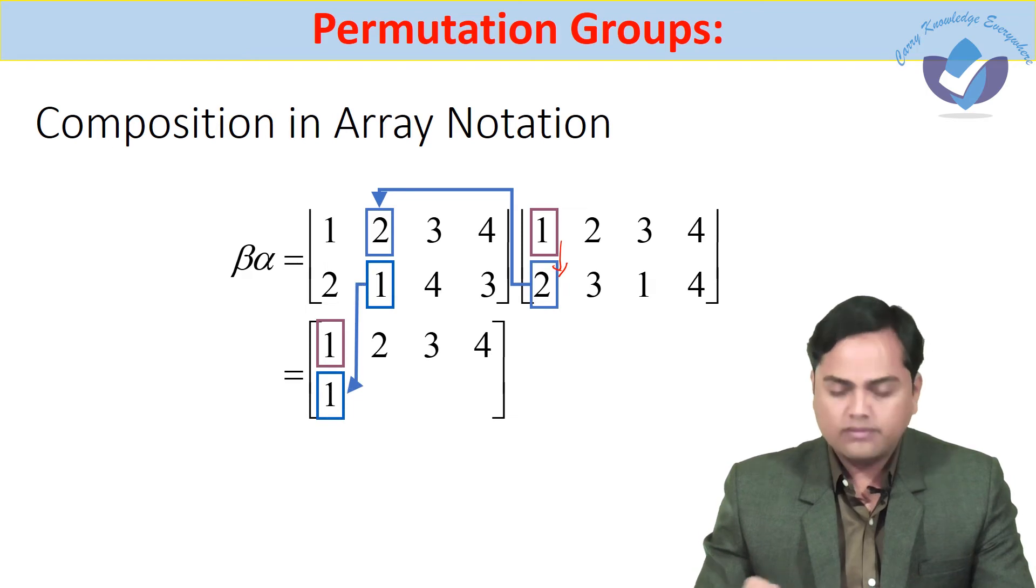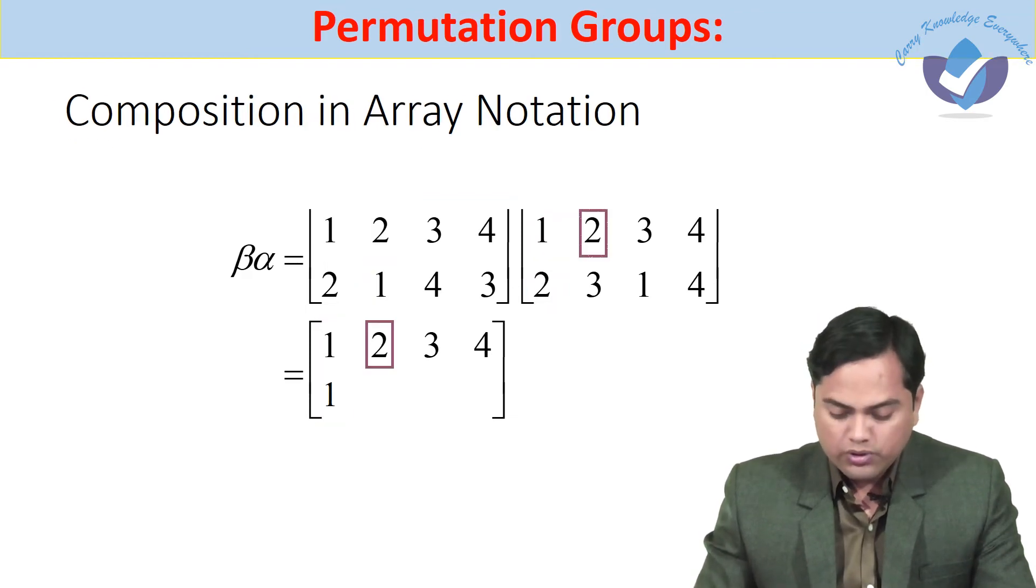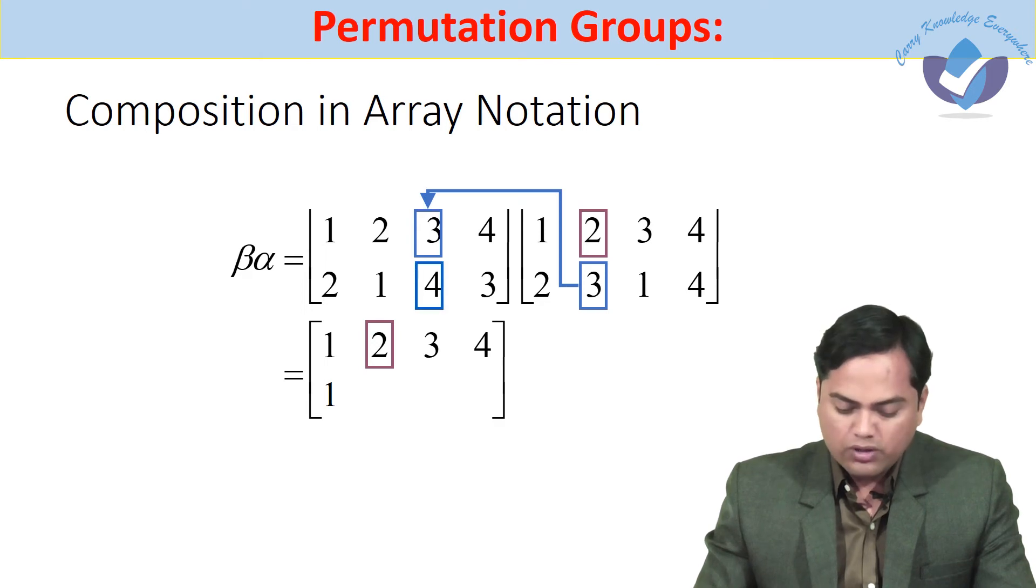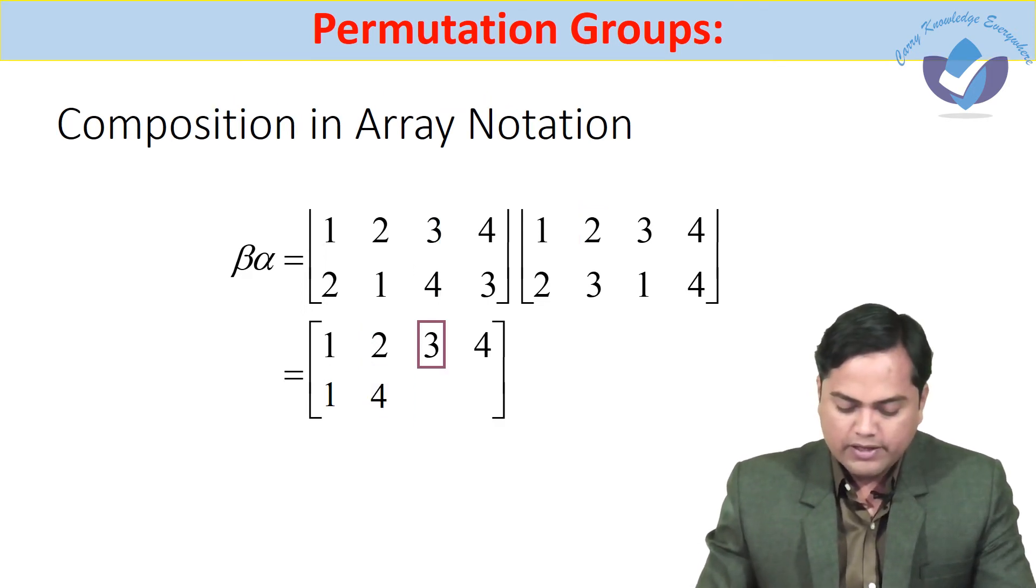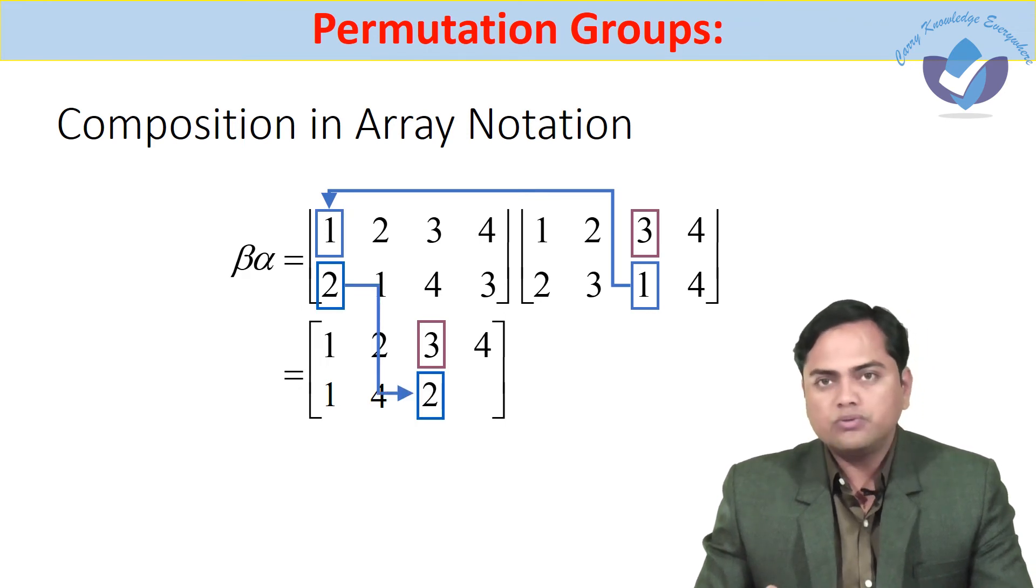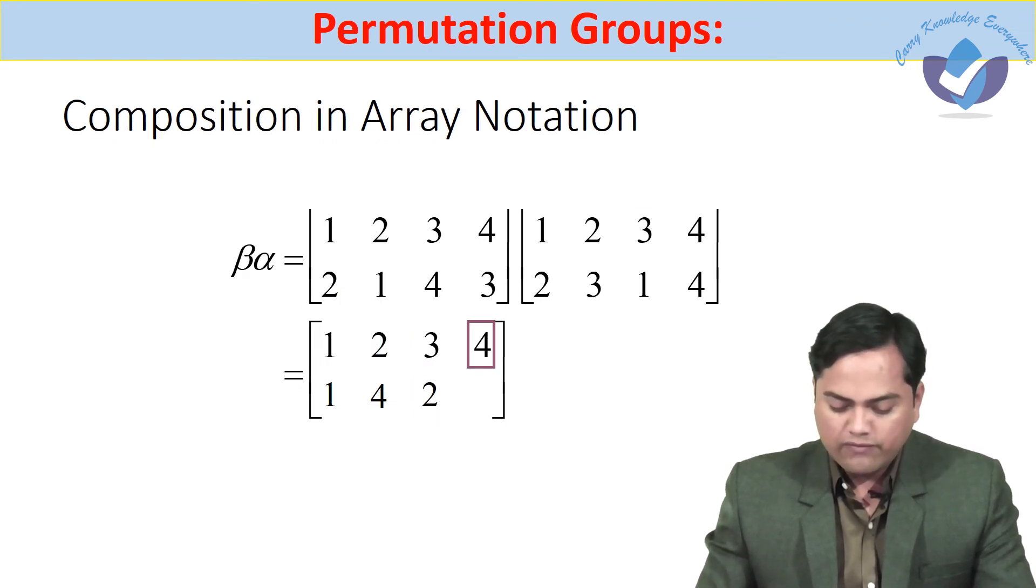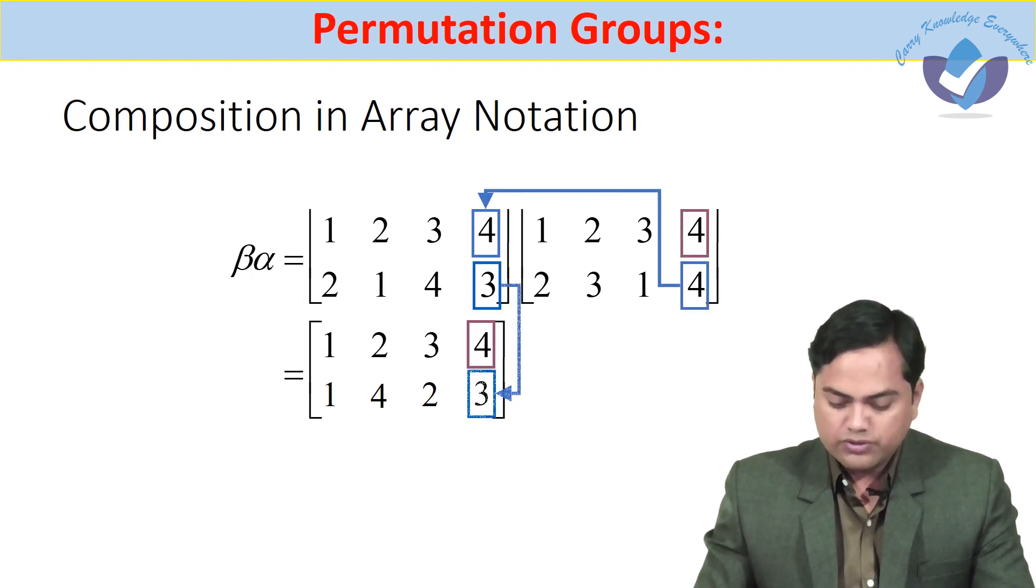So 1 goes to 1. Let us start with 2: 2 goes to 3, then 3 goes to 4, so 2 goes to 4. Then let us look at 3: 3 goes to 1, 1 goes to 2, so therefore 3 goes to 2. Now let us look at 4: 4 goes to 4, 4 goes to 3, so 4 goes to 3.